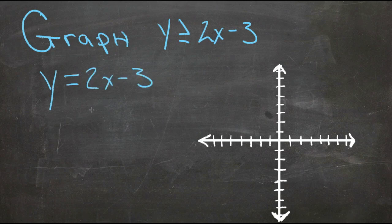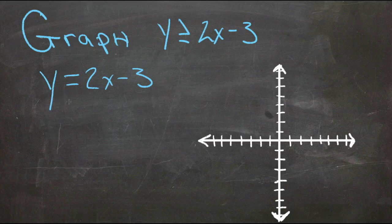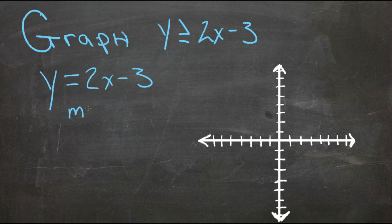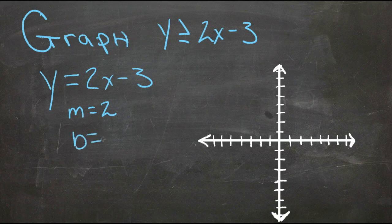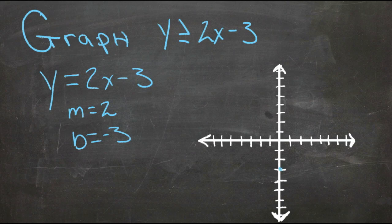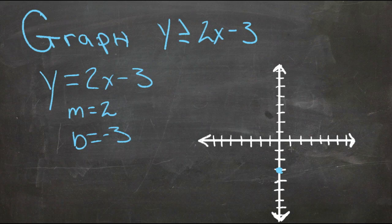If it were an equation, we'd already have it in y equals mx plus b form, so we know that the slope is m, which is 2, and that b, the y-intercept, is negative 3. So we know that there's a point at y equals negative 3, and that the slope is 2, which is rise 2, run 1.